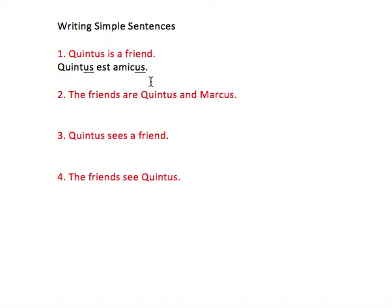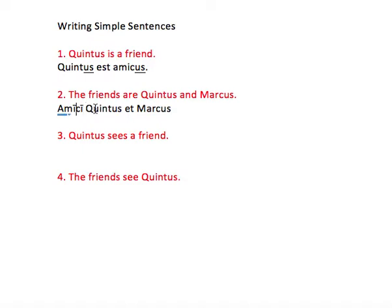Same would be for the plural. If we have the friends, so here's amici. And we have Quintus et Marcus. Now we have are. Remember, the verb to be is an irregular verb, so it has some different forms. Remember that the plural of est is sunt. And this is a big thing that y'all are missing. This is nominative plural, and the subjects and the verbs have to agree. So because this is plural, amici, this has to be plural as well.